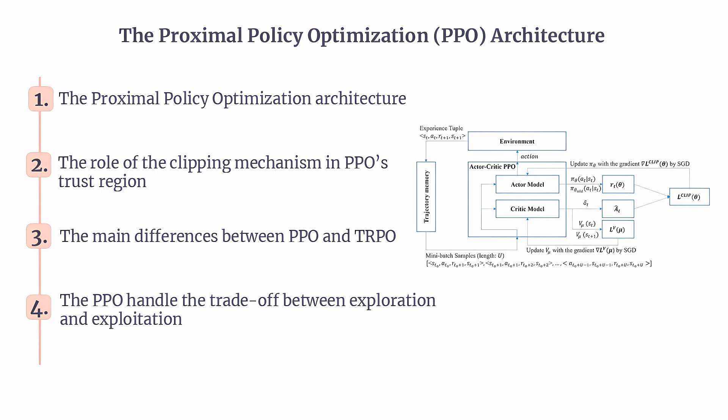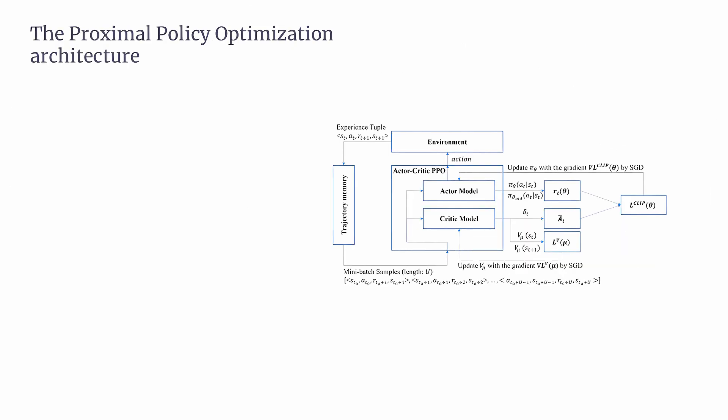Let's explore it in four parts: the proximal policy optimization architecture, the role of the clipping mechanism in PPO's trust region, the main differences between PPO and TRPO, and how PPO handles the trade-off between exploration and exploitation. Now let's explore how proximal policy optimization architecture achieves this. The first key concepts of PPO.